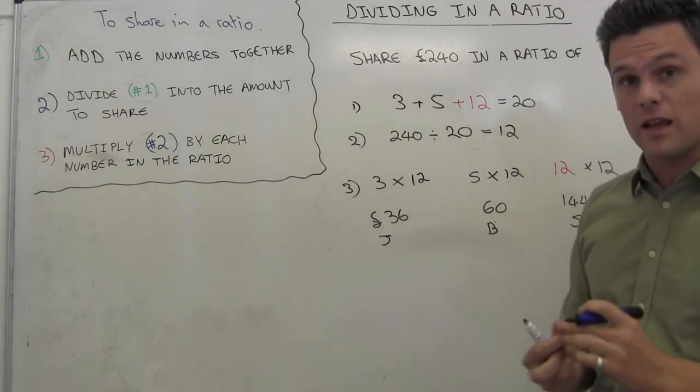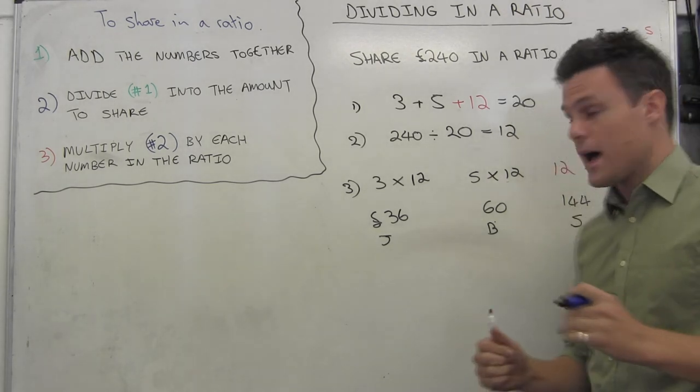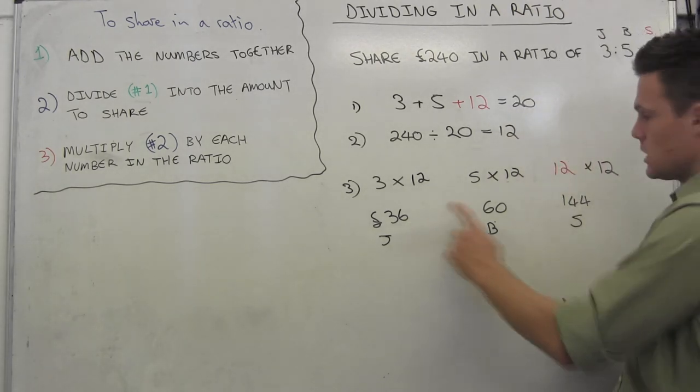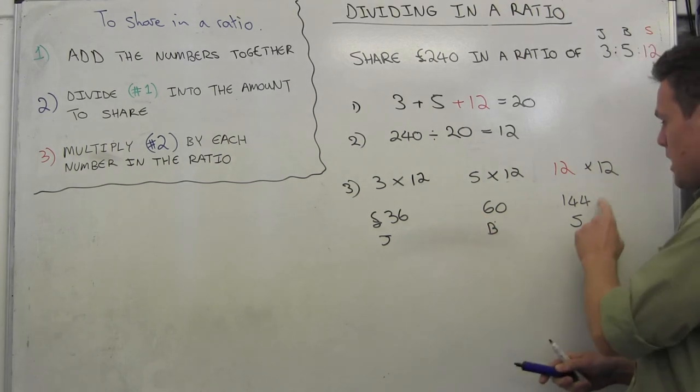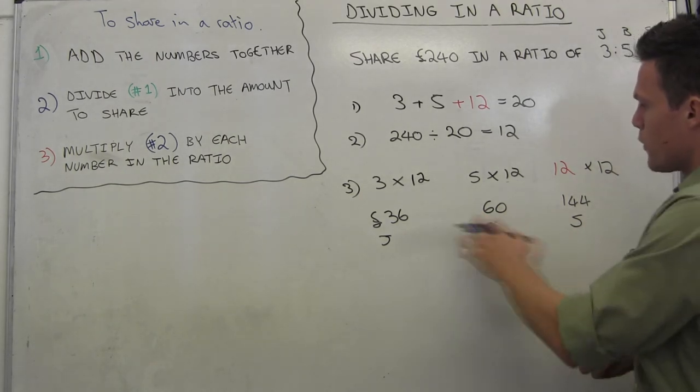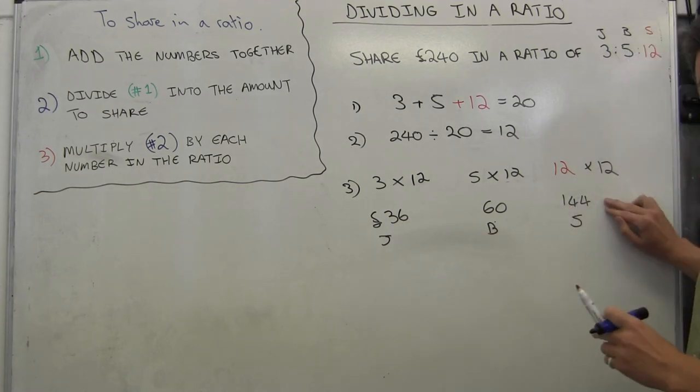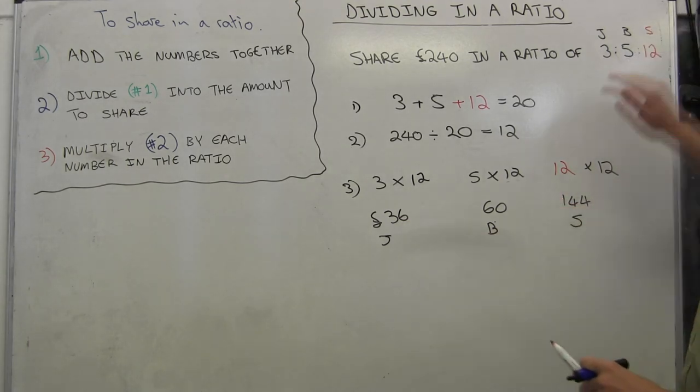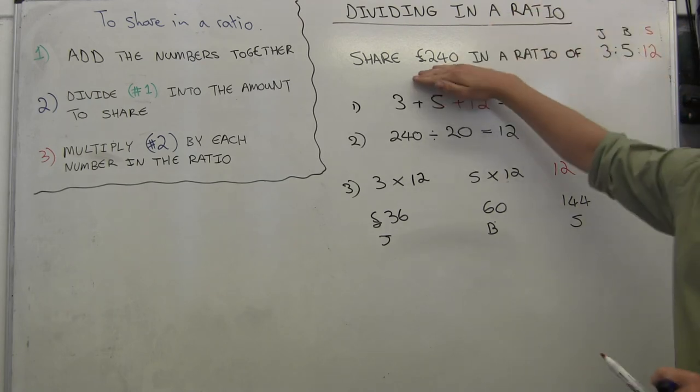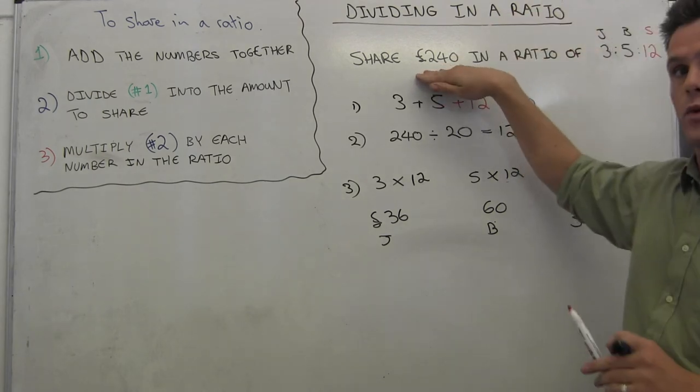Now an easy way for me to check this, making sure that I'm right, is simply to do 36 plus 60 plus 144. And if we add all that up, 36 plus 144 gives me 180 plus 60, giving me the total that I was originally trying to share of £240.